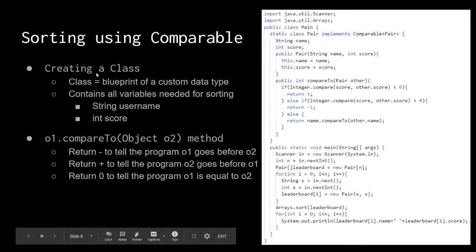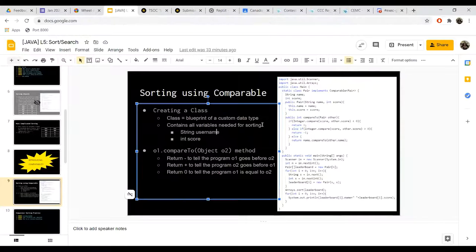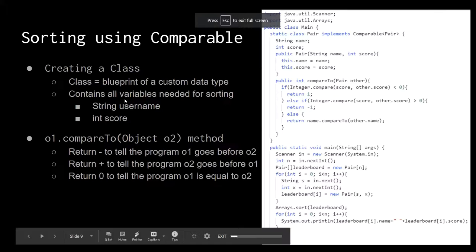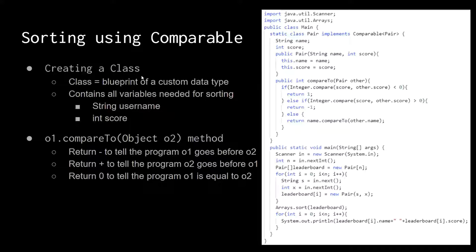So how can we do this? First, you have to create a class. A class is basically a blueprint of a custom data type. You already learned about int, long, and Boolean — these are all data types that Java gives you by default.